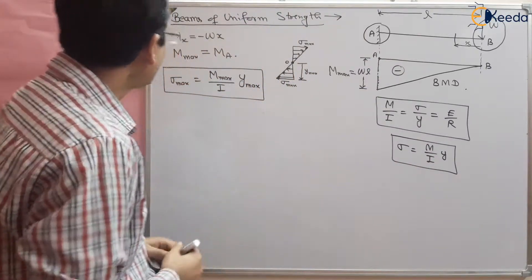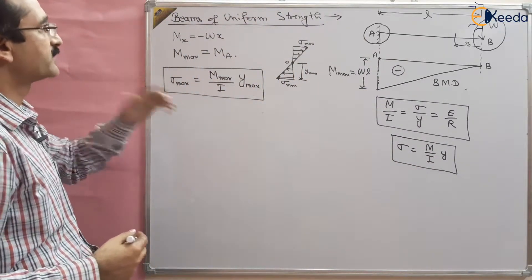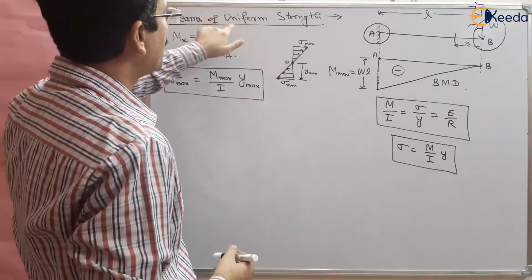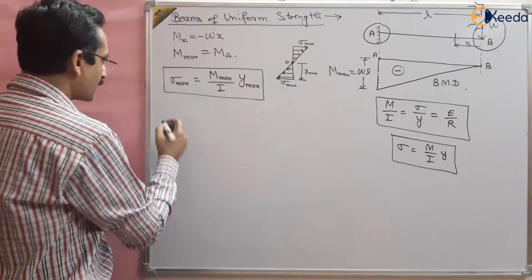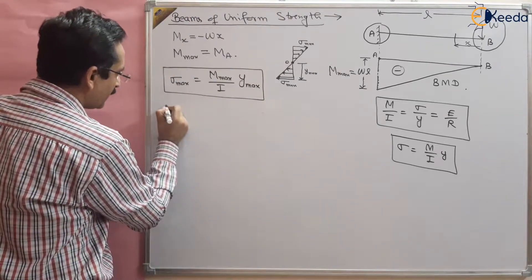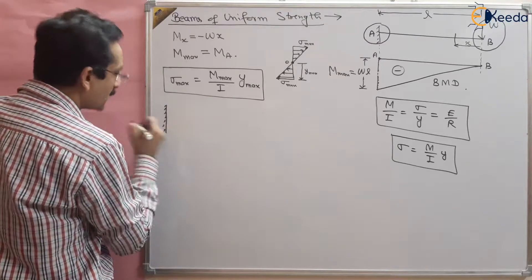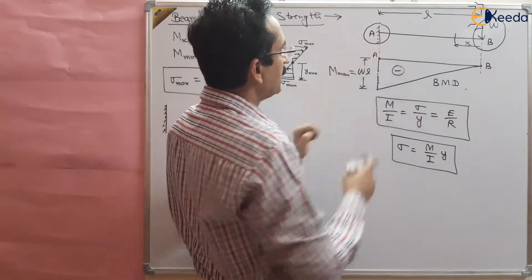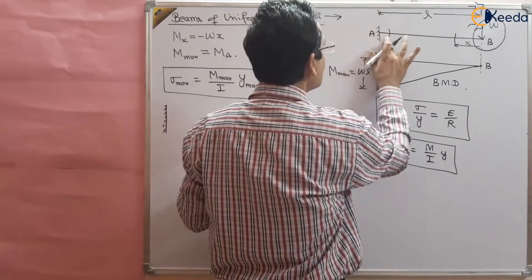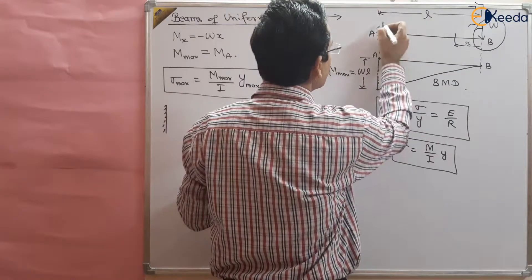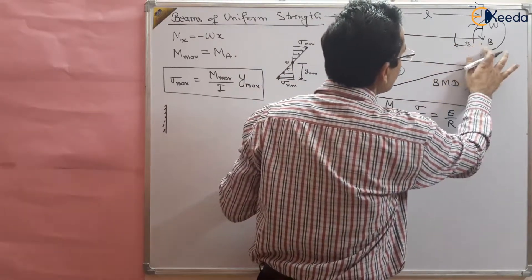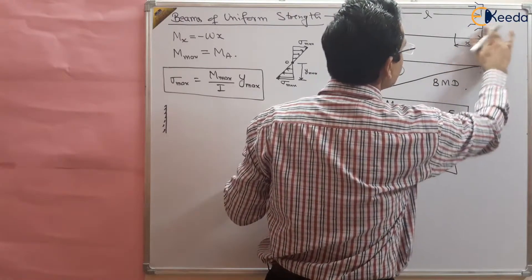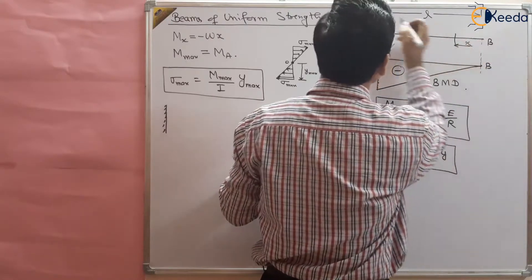We can make the beam of varying cross-section to keep the bending strength of the beam uniform. We can make a beam like this — this is a rectangular beam of uniform cross-section area, which we have shown here. There is no variation in this beam along the length.